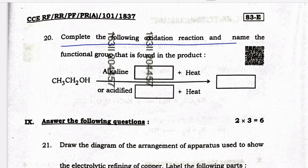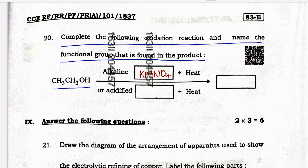Question 20: complete the following oxidation reaction and name the functional group found in the product. CH₃CH₂OH, when reacted with alkaline KMnO₄ + heat or acidified K₂Cr₂O₇ + heat, gives CH₃COOH. Now we will go to Part C: biology.